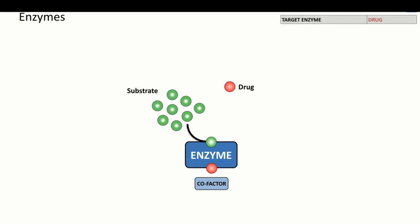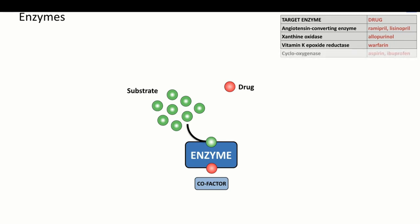Examples of common drugs that act by inhibiting enzymes are the angiotensin-converting enzyme inhibitors ramipril and lisinopril, used to treat hypertension and heart failure; the xanthine oxidase inhibitor allopurinol, used to treat gout; the vitamin K epoxide reductase inhibitor warfarin, used as an anticoagulant to prevent thrombotic occlusion of blood vessels; the cyclooxygenase inhibitors aspirin and ibuprofen, used as antiplatelet and anti-inflammatory agents; acyclovir, used to inhibit herpesvirus replication; and the anticholinesterase drug neostigmine, used to increase muscle strength in myasthenia gravis.